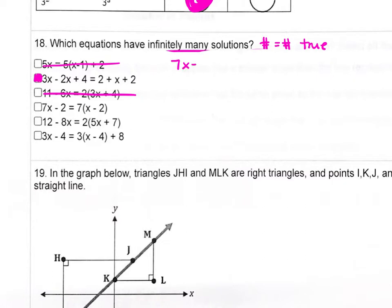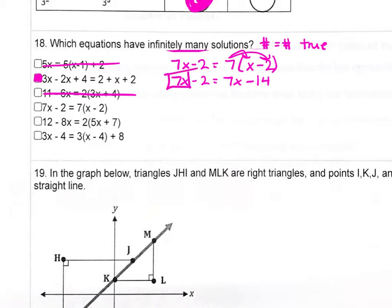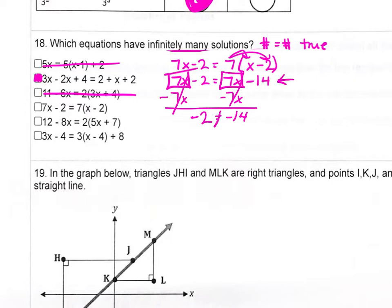Our next problem: 7x minus 2 equals 7 times (x minus 2). On the right side, distribute 7 to get 7x minus 14. The x terms on each side are the same, so when we subtract 7x from both sides it cancels out, but the constants are different. We can already tell there's no solution, so we cross that one off — we're looking for infinite solutions.